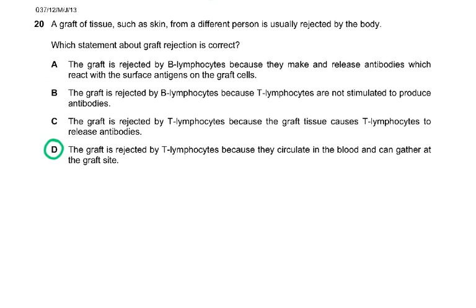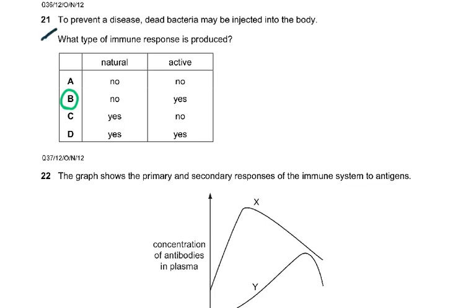Question 20: a graft tissue such as skin from a different person is usually rejected by the body. The graft is rejected by T lymphocytes because they circulate in the blood and gather at the graft site. Question 21: to prevent a disease, dead bacteria may be injected into the body — what type of response is this? Dead bacteria means it's not natural, and since they are injected, it has to be artificial active immunity. It's not natural, but it is active because lymphocytes undergo clonal selection. So the answer is B: artificial active immunity.